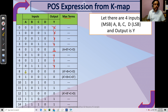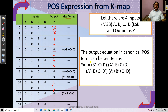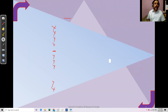Continuing the max terms: A-dash plus B plus C plus D-dash, and A-dash plus B-dash plus C plus D. The output equation in canonical POS form is the product of all max terms — first max term, times second, times third, times fourth. Now we'll minimize this without Boolean algebra using the K-map technique.